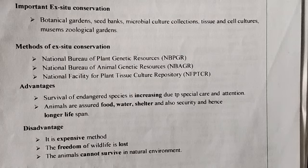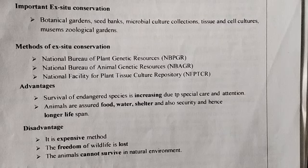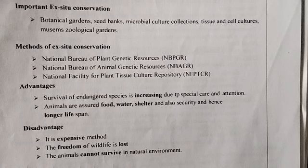So, in this video we have seen about the ecosystem — structure of ecosystem, its biotic and abiotic components, its types, consumers, producers, decomposers, and their examples. We have also seen about the conservation of biodiversity, including in-situ and ex-situ conservation and their types. Thank you.